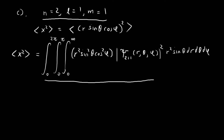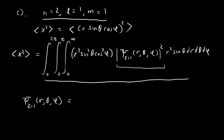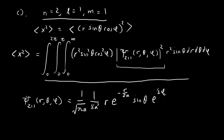We want to solve this integral, so first what exactly is ξ₂₁₁? You can check back on a previous problem where we explicitly derived this expression. I'm just going to copy that result. We found that ξ₂₁₁ equals 1 over sqrt(π·a) times 1 over 8a², times r times e^(−r/2a) times sine theta, times e^(iφ).